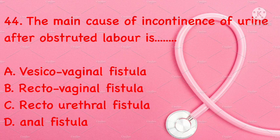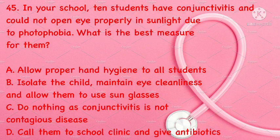The main cause of incontinence of urine after obstructed labor is: vesico-vaginal fistula, recto-vaginal fistula, recto-urethral fistula, or anal fistula. Correct answer is A: vesico-vaginal fistula.